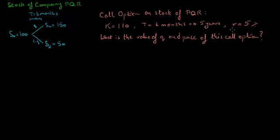The discount rate we're given is 5%, and we'll assume this is continuously compounded. The question is: what is the value of Q, the risk-neutral probability of the stock price going up, and the price of this call option?